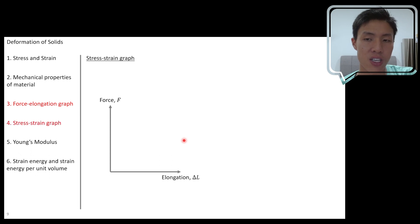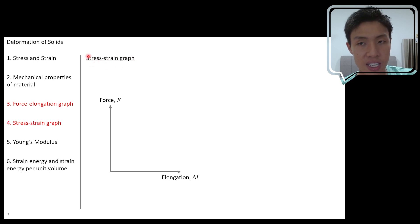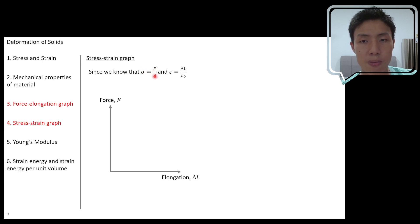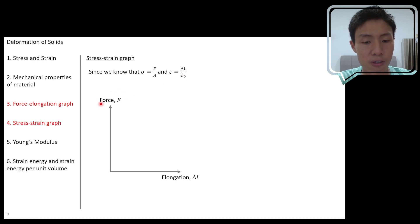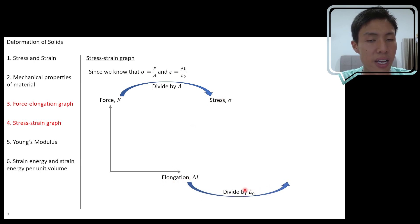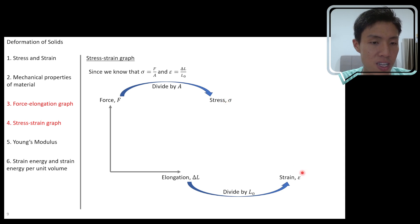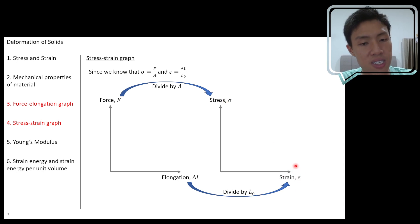Once we have a force-elongation graph, we can move on to sketch another graph called the stress-strain graph. Stress is sigma (σ) and strain is epsilon (ε). Since stress σ equals force divided by area, and strain ε equals change of length divided by original length, we can take the force and divide by the area to obtain stress, and divide the elongation by the original length to get strain ε. Now we have stress and strain, so we can sketch a stress-strain graph.